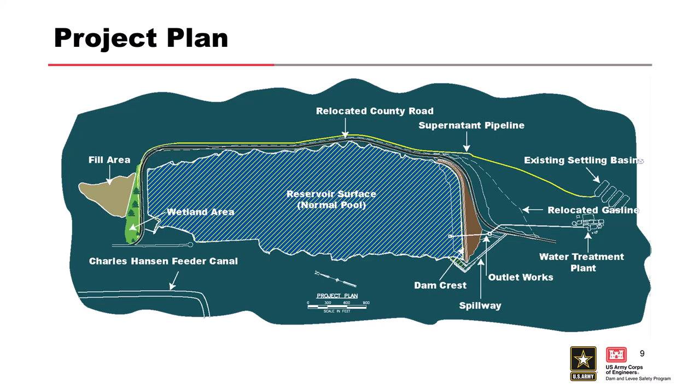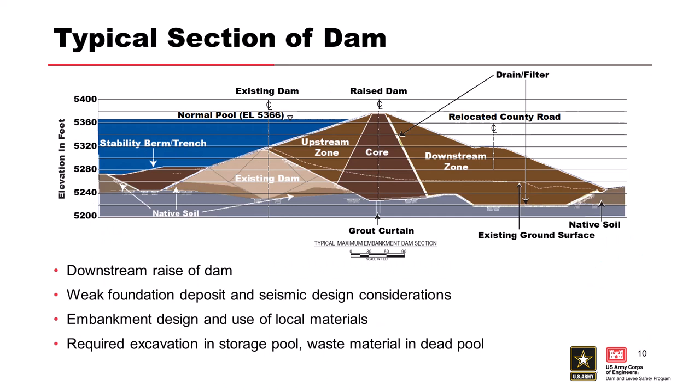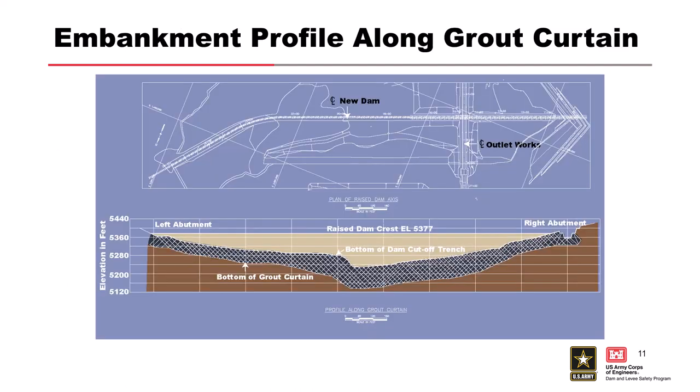Water was controlled through the feeder canal, picked up, and pumped down to the treatment plant. A cross-section view shows the downstream raise with the shell material and core. A plan and profile along the centerline of the embankment shows the extensive grouting program, with angled holes that intersected particularly high grout takes in the granite — which had many joint sets on the right abutment.